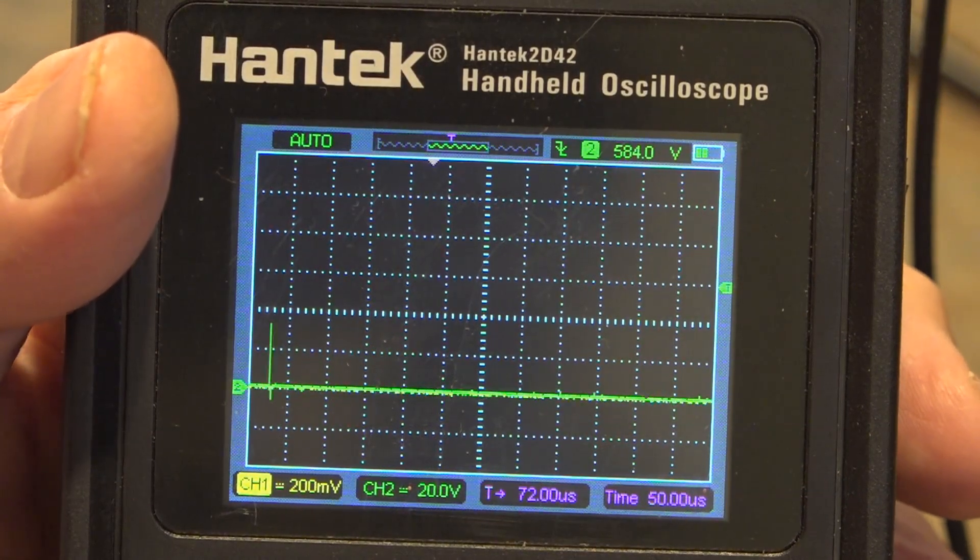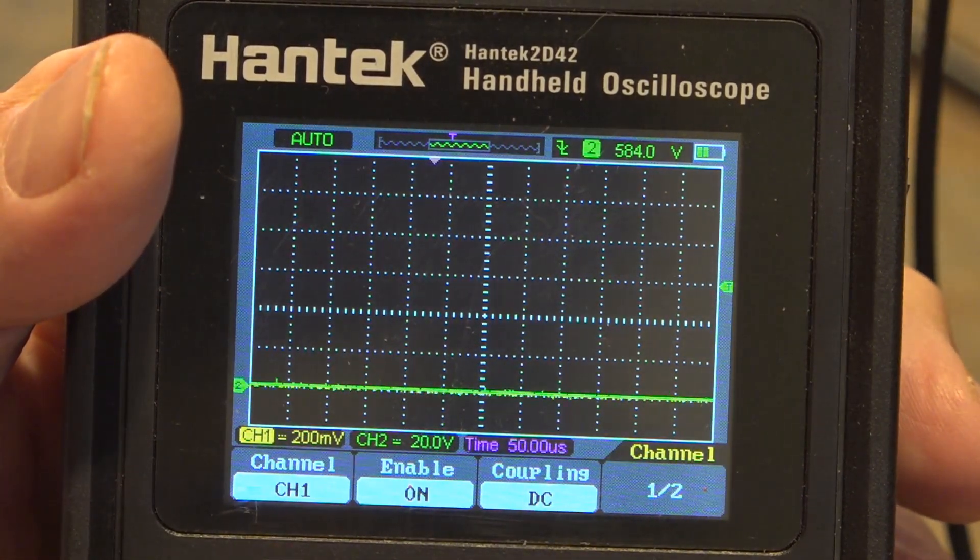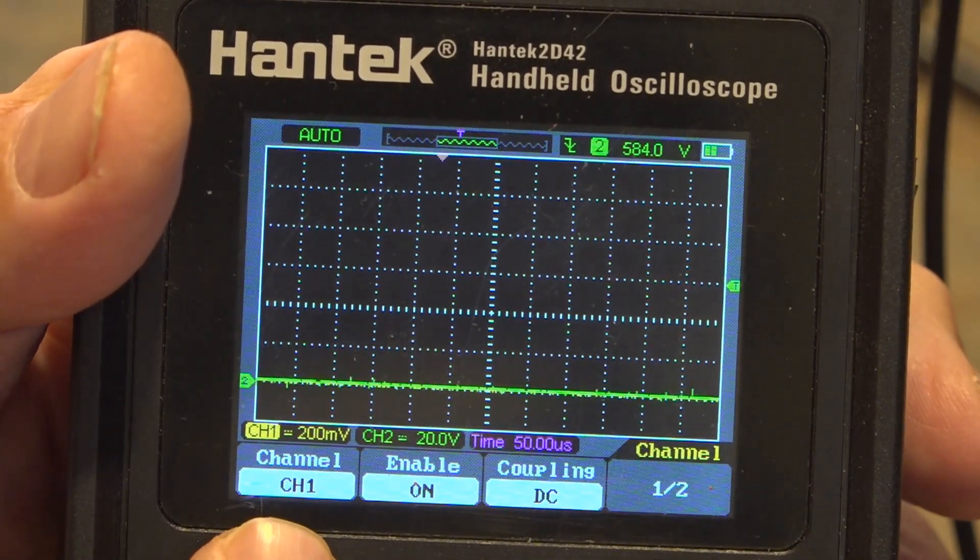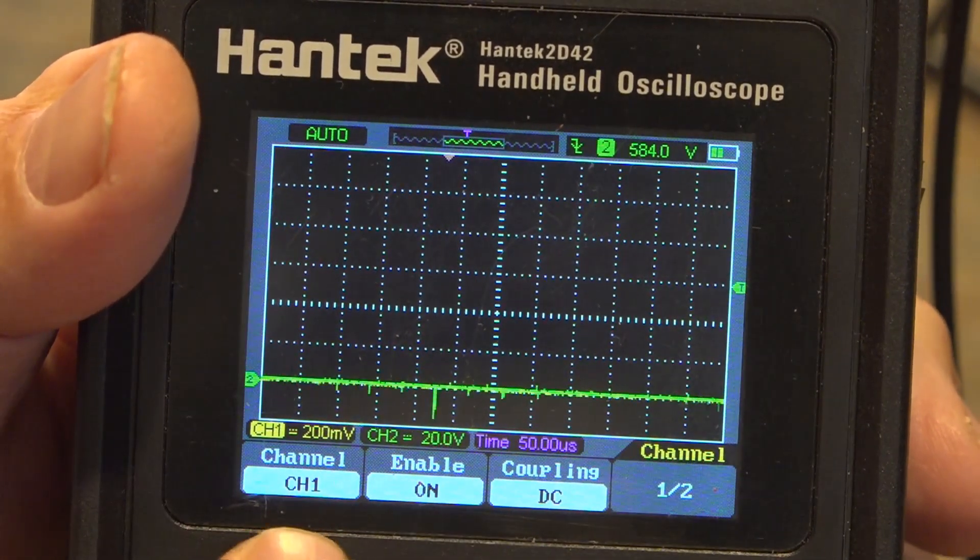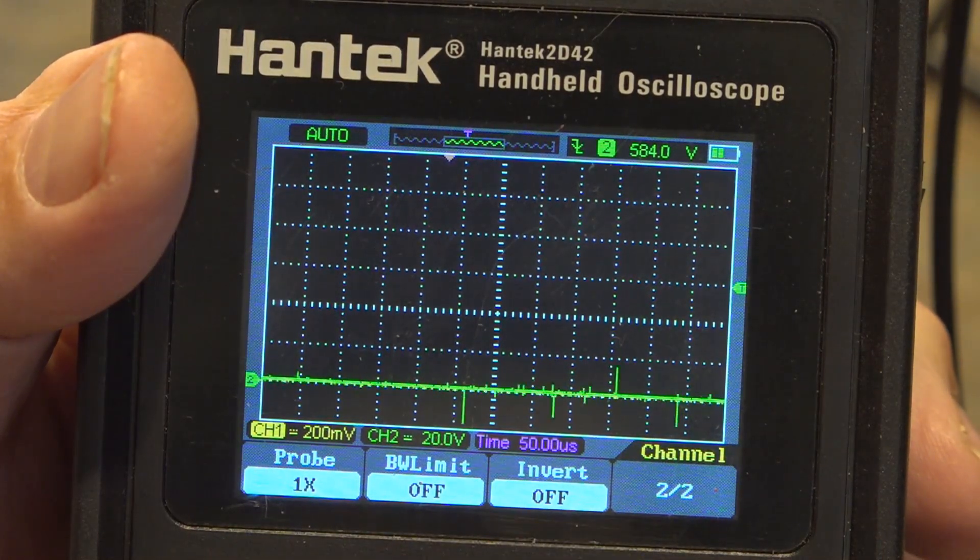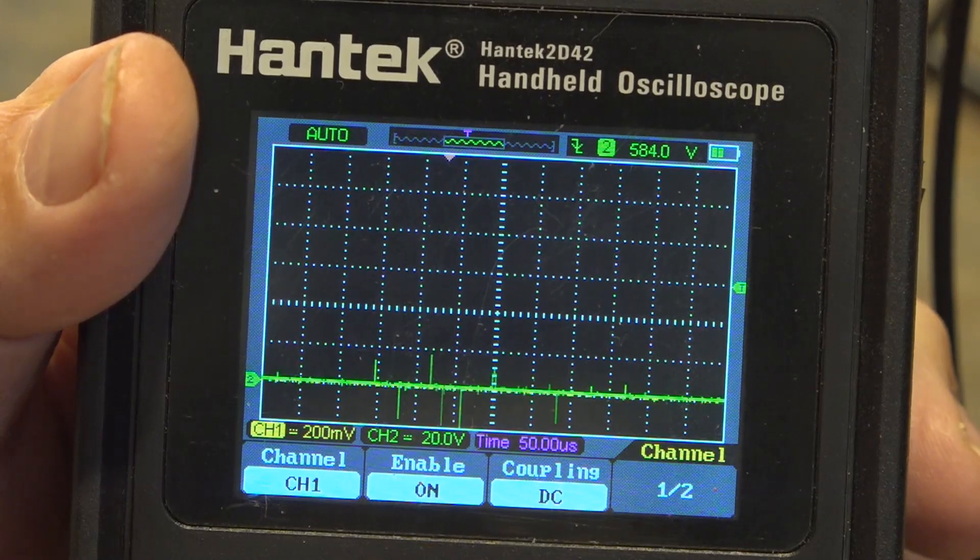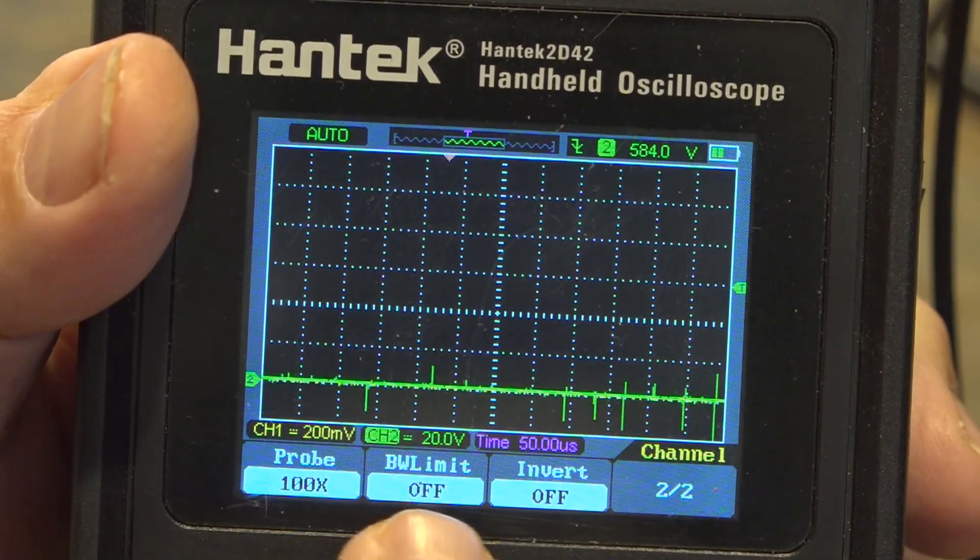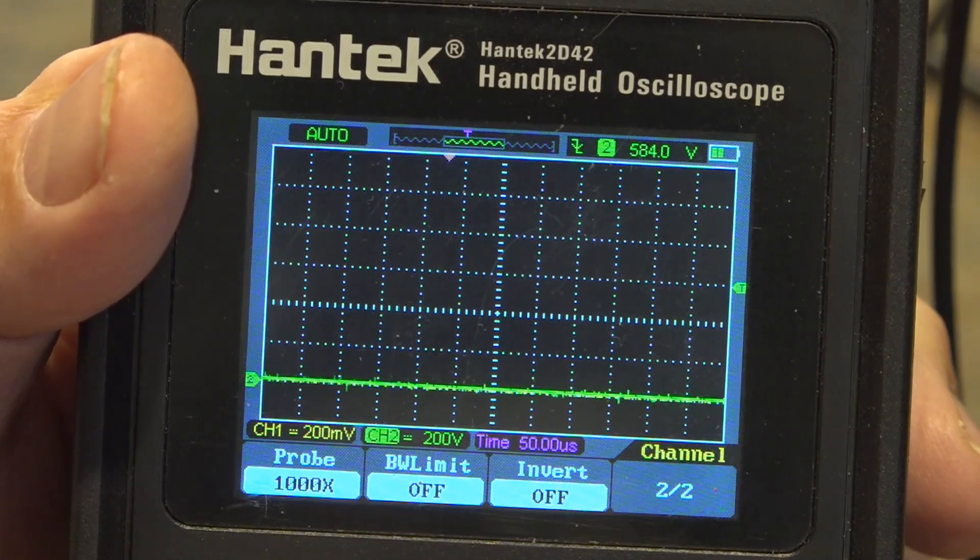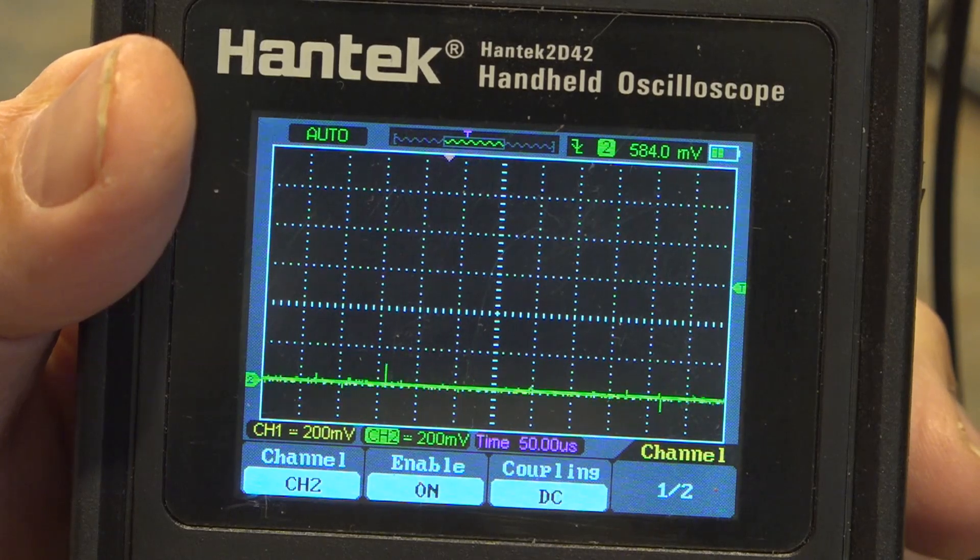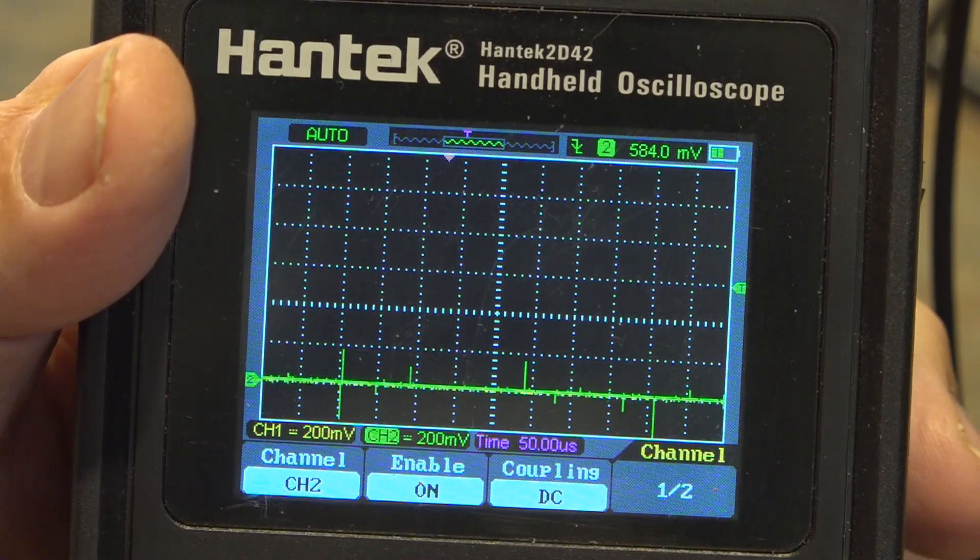Here's the Hantek. I'm going to hit the channel button and you can see I'm on Channel 1, and it's enabled and DC coupled. On the second page I've got the probe set to times 1, bandwidth limit and invert off. Channel 2 is exactly the same - oh, no, not 100, let's change that to times 1, off and off.